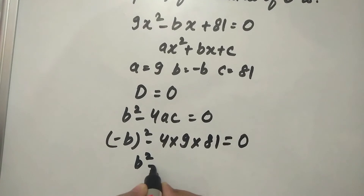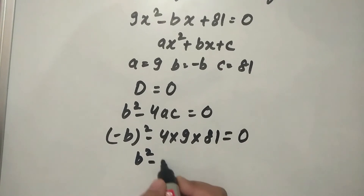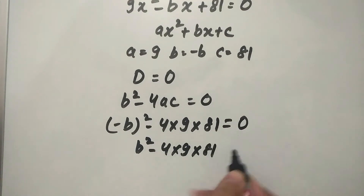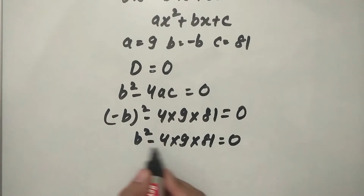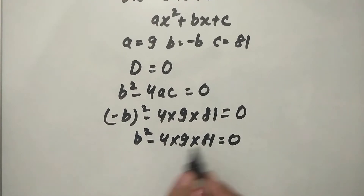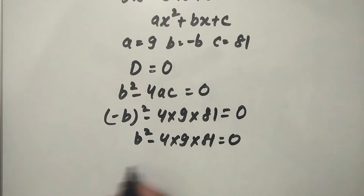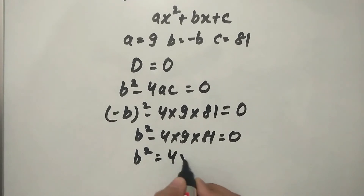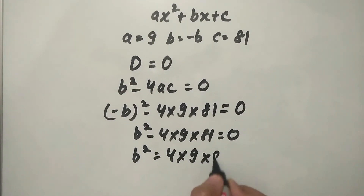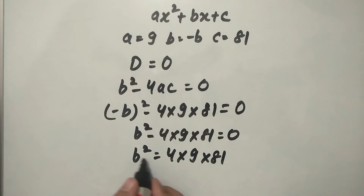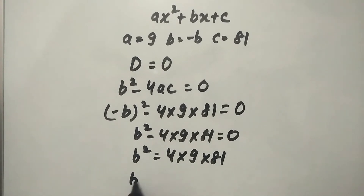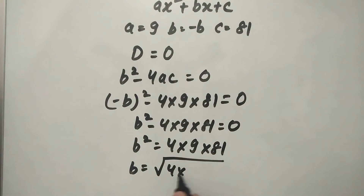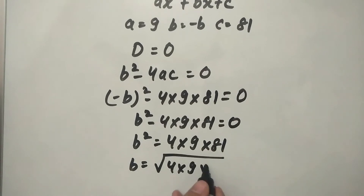So b² - 4 × 9 × 81 = 0, which means b² = 4 × 9 × 81. Therefore b = √(4 × 9 × 81).